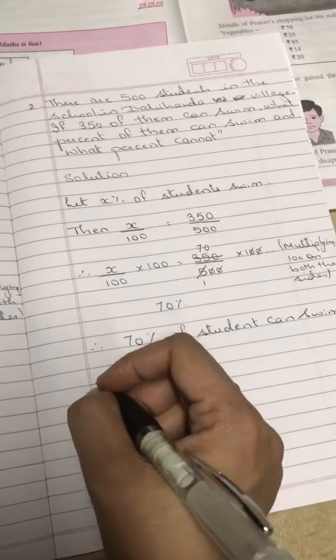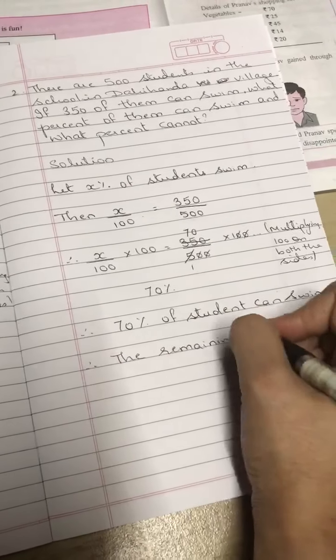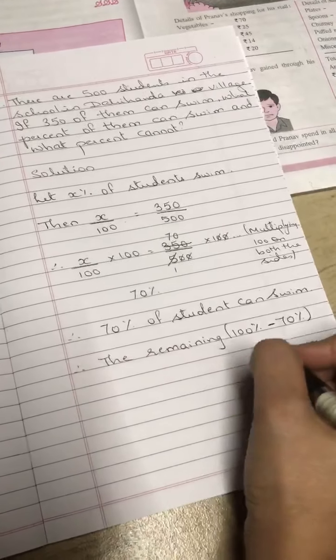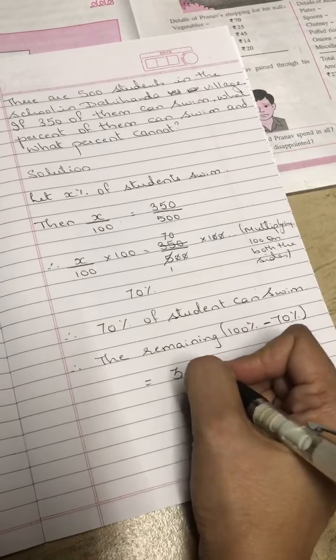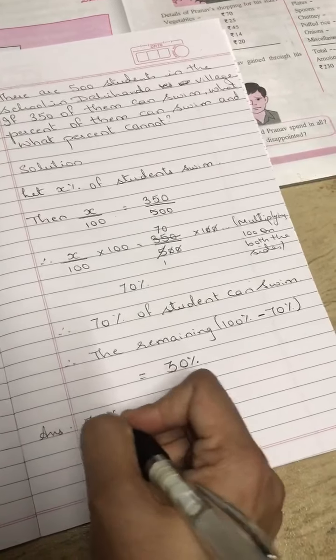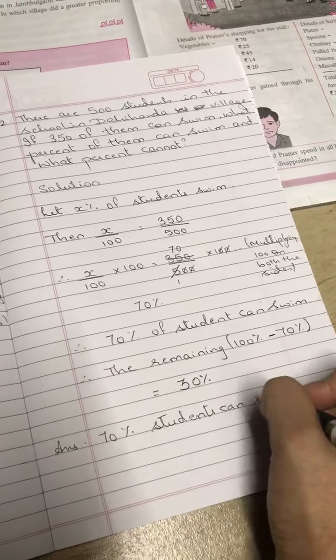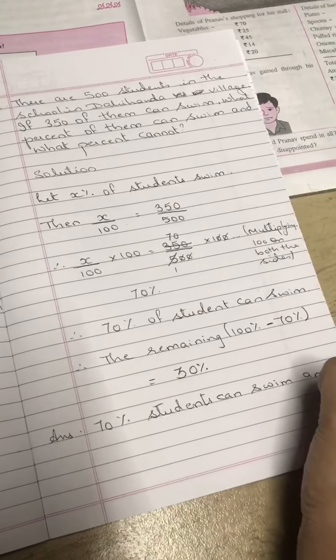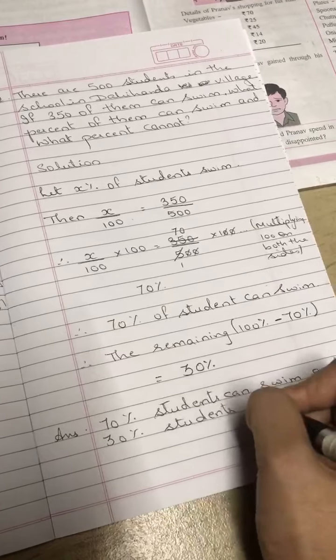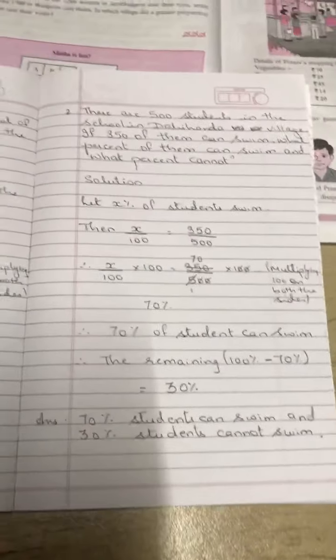So therefore the remaining, that is 100 percent minus 70 percent, you get 100 minus 70, you get 30. So 30 percent. So answer: 70 percent student can swim and 30 percent students cannot. So this is the way you will solve the sum.